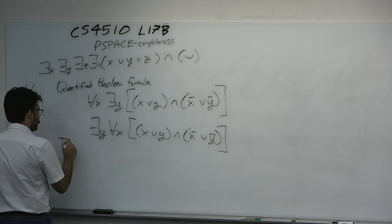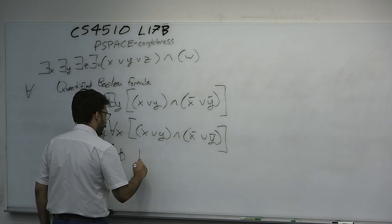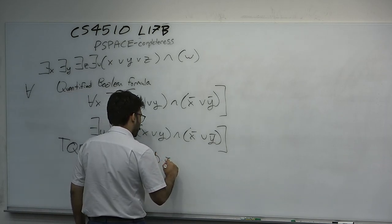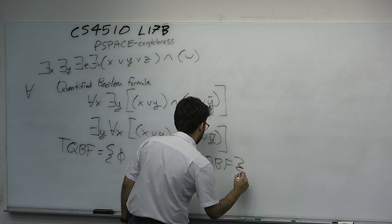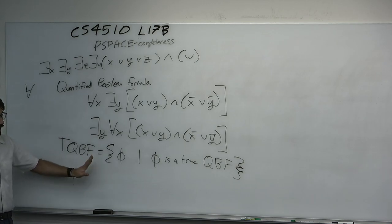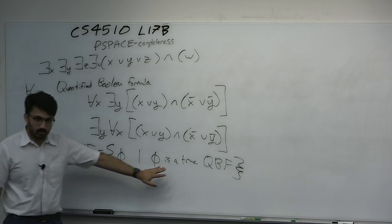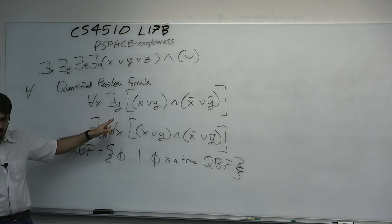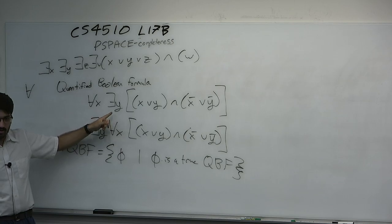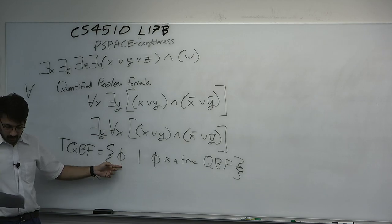TQBF is our generalized analogy of SAT. This is the language of formulas phi such that phi is a true quantified Boolean formula. Just as SAT was a satisfiable CNF, TQBF is a true quantified Boolean formula — where there is a selection of variables, both existential and universal, such that the formula is satisfied. I claim this is PSPACE-complete.